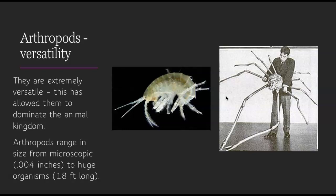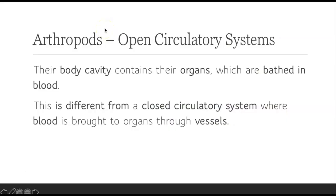Arthropods are extremely versatile. This has allowed them to dominate the animal kingdom — 85% of all animals are arthropods. They range in size from microscopic, as small as 0.004 inches, to huge, giant organisms 18 feet long. Arthropods have open circulatory systems. Their body cavity contains their organs, and the organs are bathed in blood. If you think about our circulatory systems, they're called closed circulatory systems, where blood is taken to all of our organs via blood vessels. In arthropods, the organs are just kind of sitting in a bath of their blood — a bit more basic than how we work.